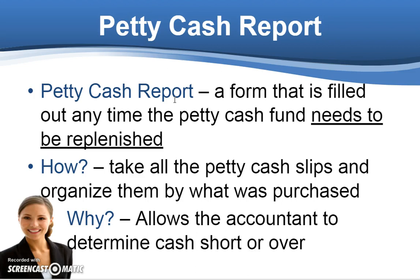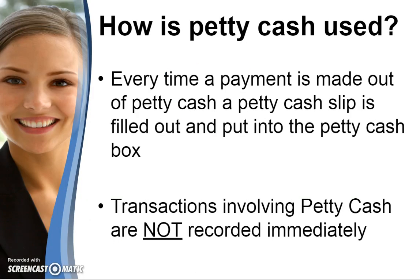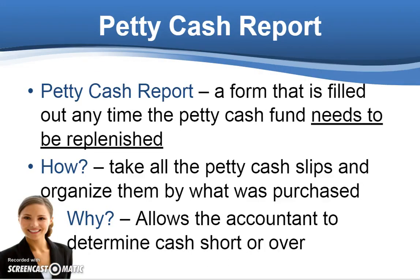You take all of the slips that are inside the petty cash box — remember, you have to fill out a slip any time you want to use petty cash. So the accountant takes all those slips from the petty cash box and records them in the petty cash report. They might say, okay, on June 7th we purchased food for $18.43, and on June 9th we went to Office Depot and bought staples and paper clips for $12.31. They're going to have a list of all of the things that are on the petty cash slips.